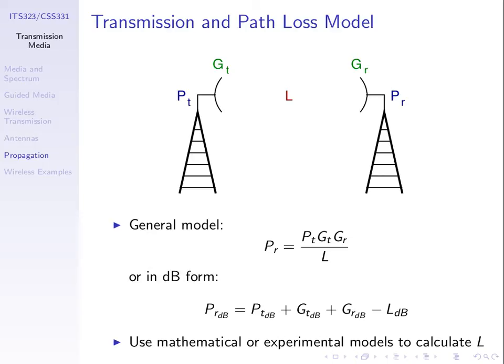We can work in absolute values using the link budget equation and free space path loss model, or we can convert everything to dB. Why convert to dB? Because it allows us to do addition and subtraction instead of multiplication and division. Sometimes it's easier, and if you look up the specs of equipment, the values are often expressed in dB.